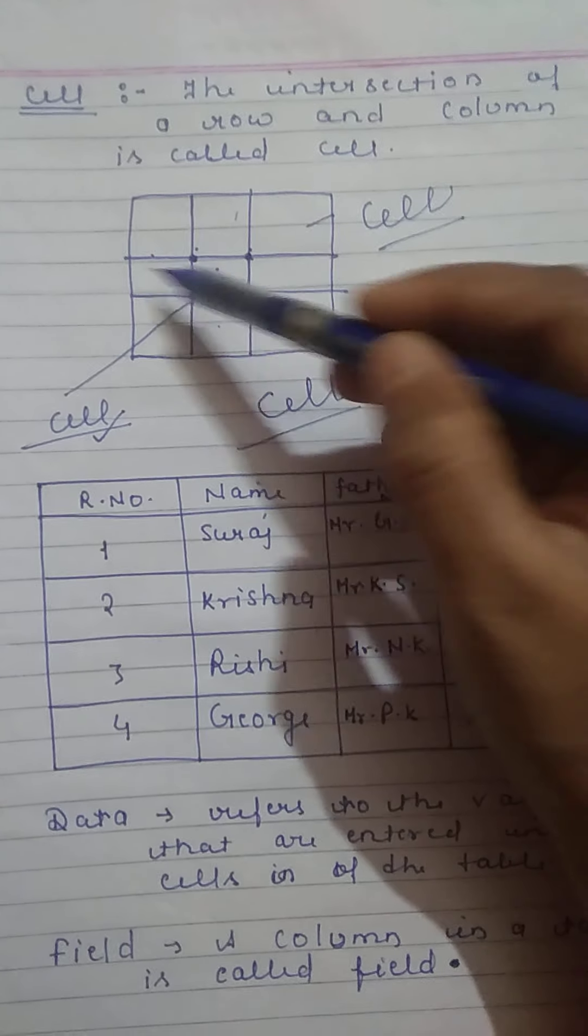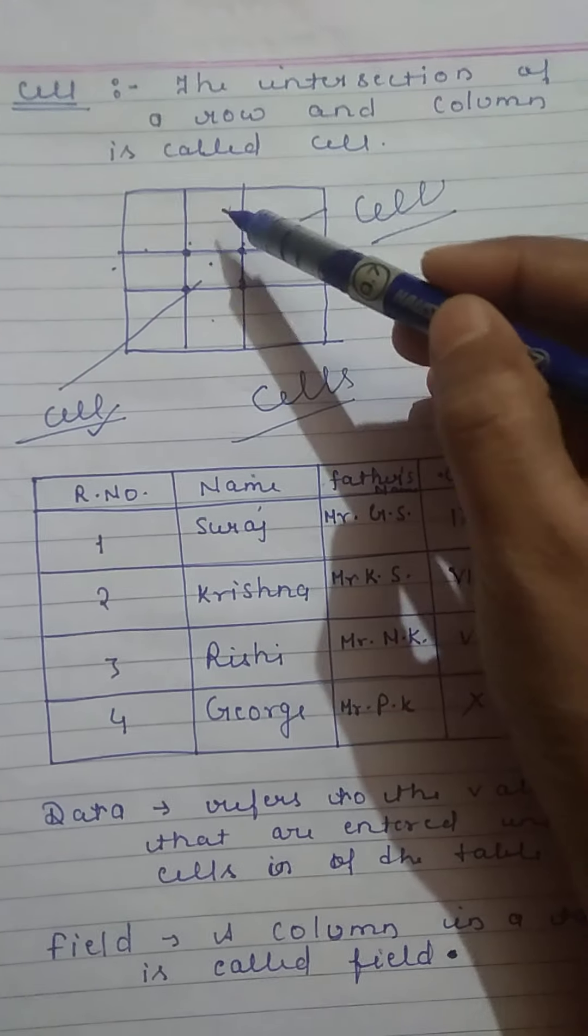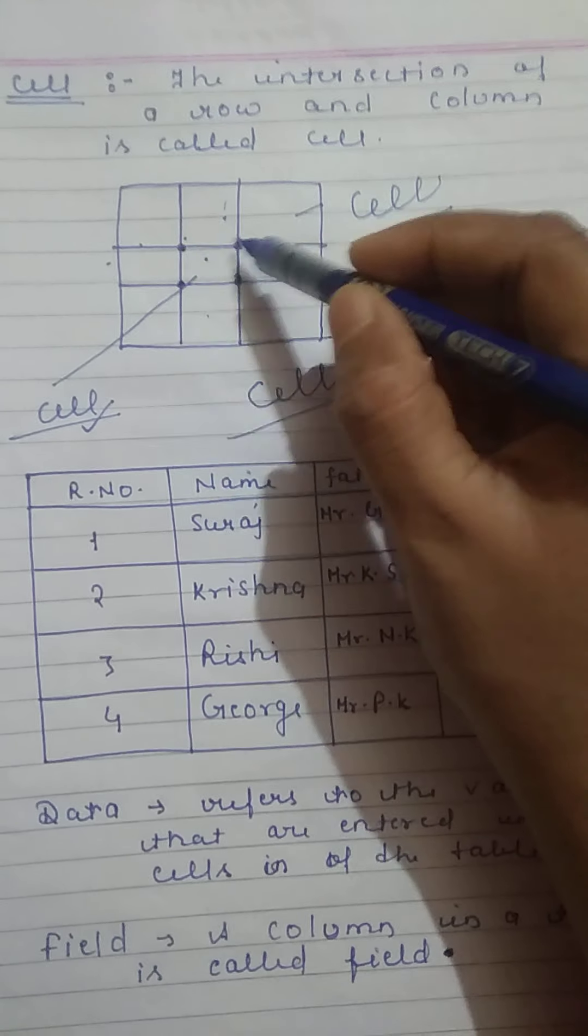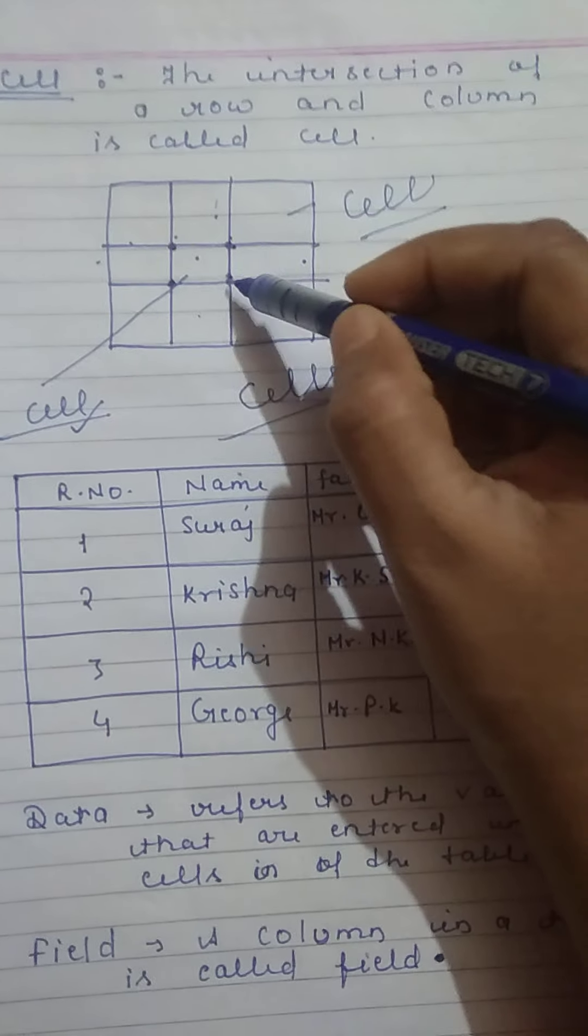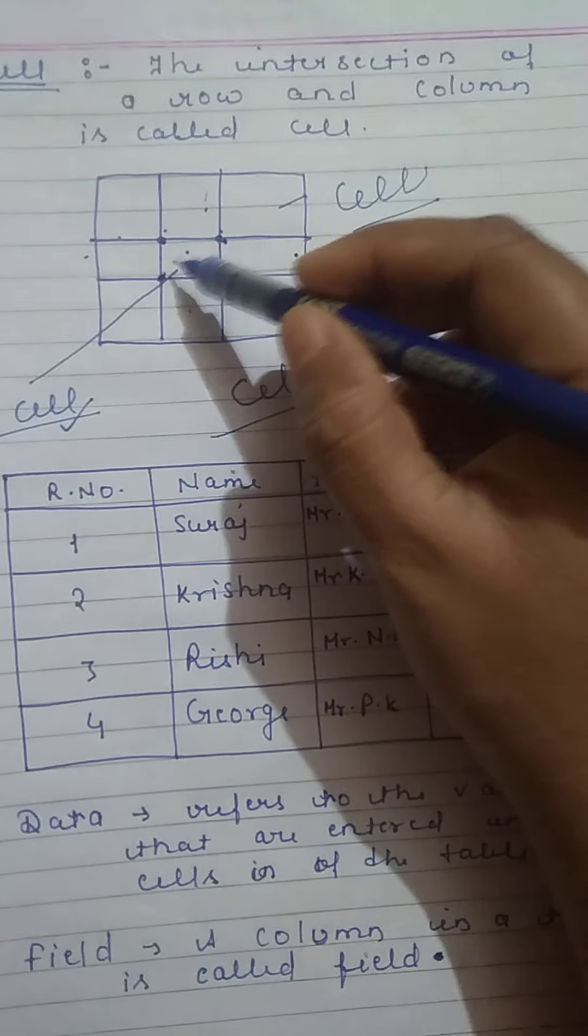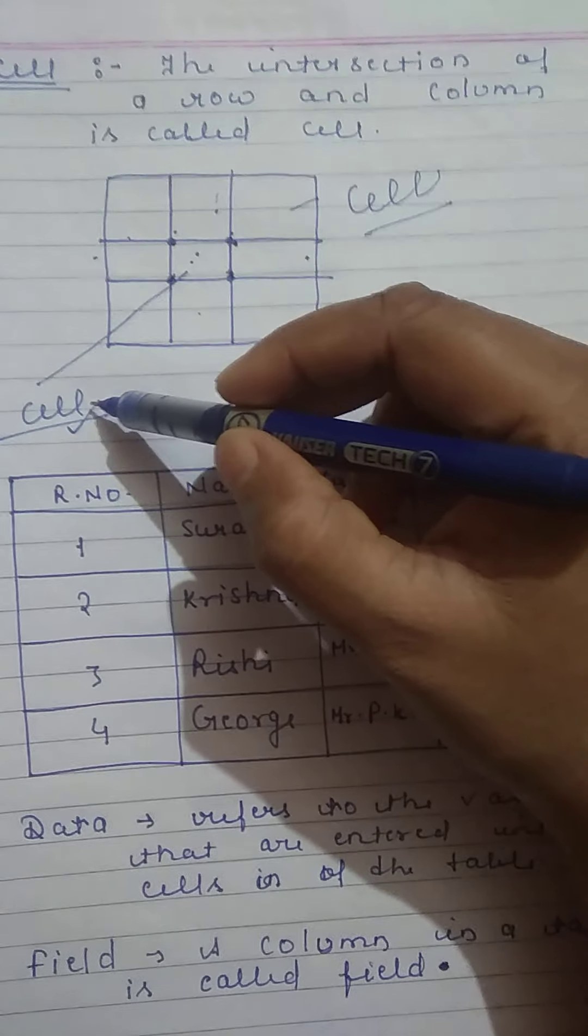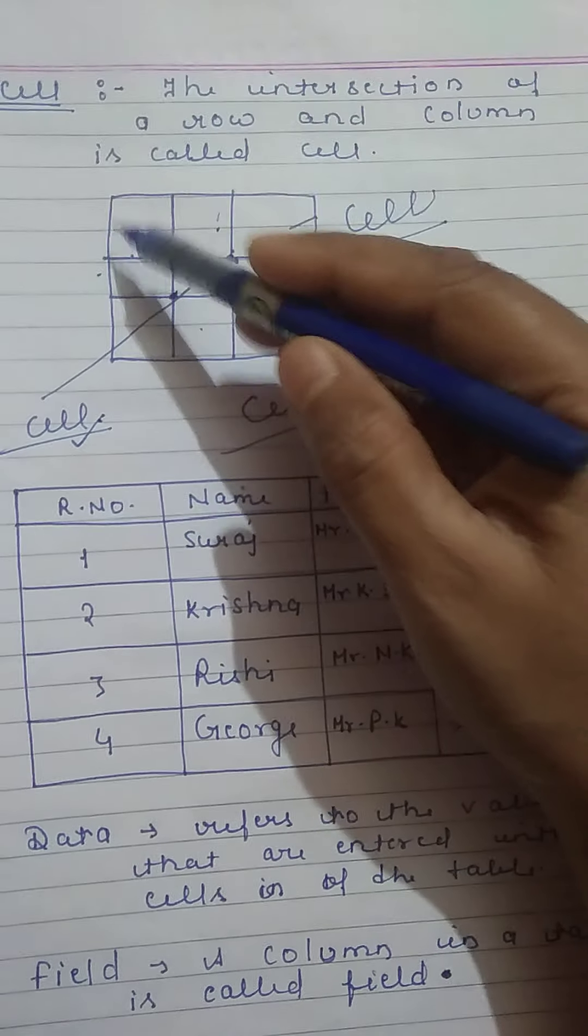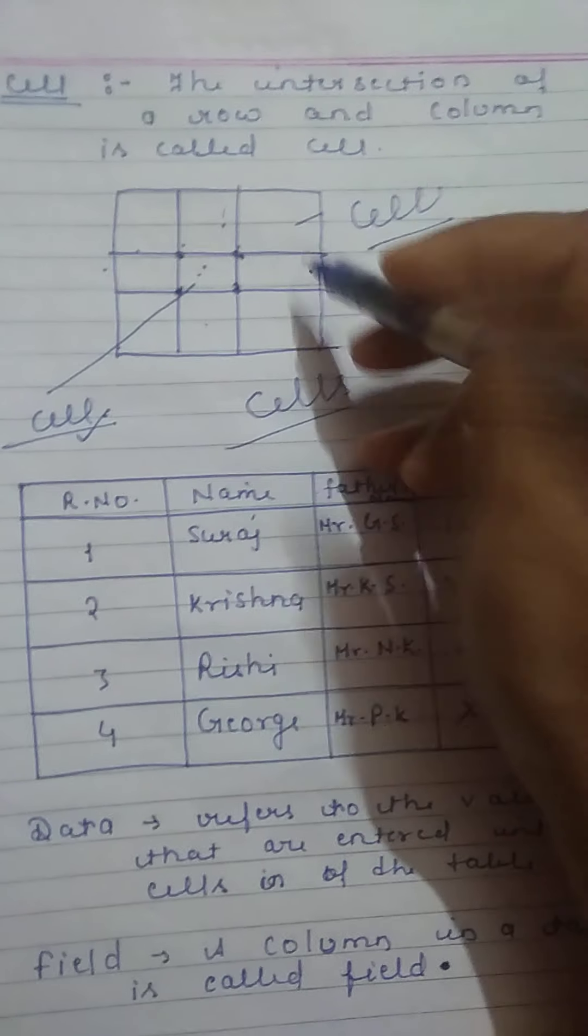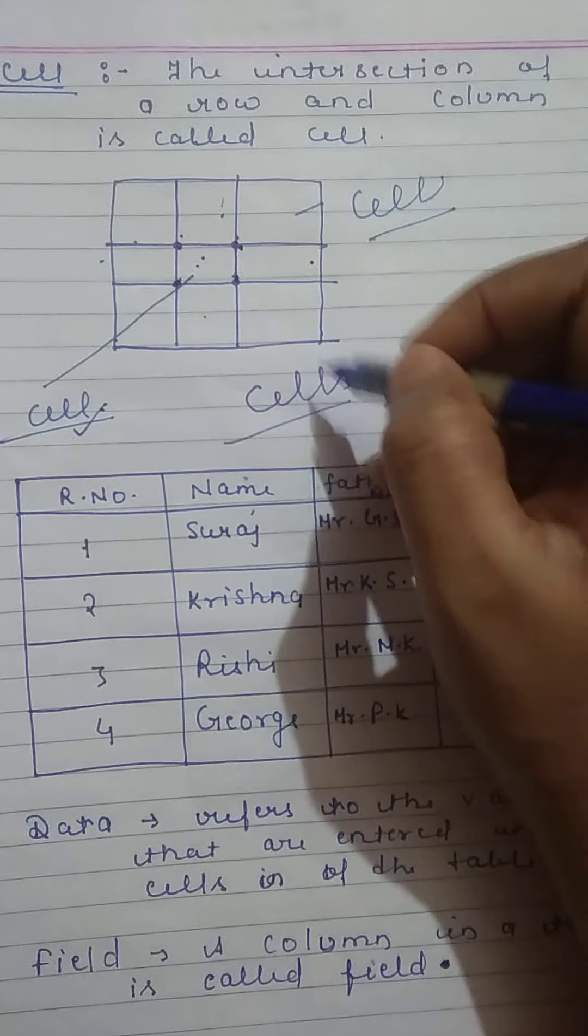This is one column, this is one row. And this column and row is intersecting to each other at these points. If we will join all these points, it will create a smaller box. This smaller box is called cell. It means all smaller boxes are called cells.